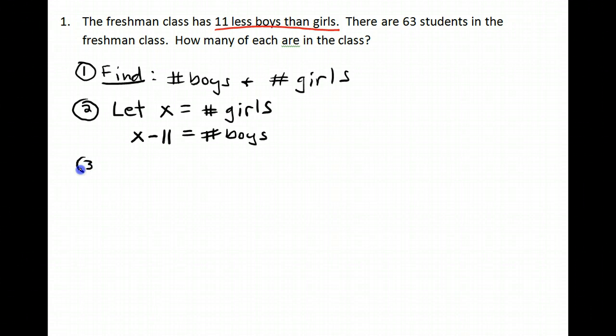Alright, step three is our equation. What I know is that there are sixty-three students in the class. Now, that means boys plus girls. So I'll take the number of girls plus the number of boys, and that's got to equal sixty-three.